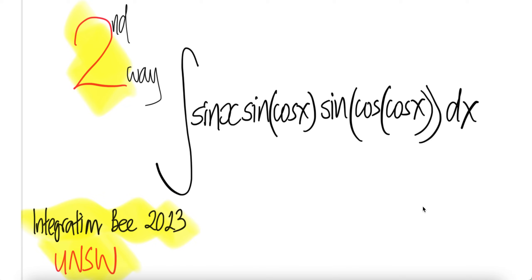Integral sin x times sin(cos x) times sin(cos(cos x)) dx. Let us do this in the second way. Problem taken from Integration B 2023 UNSW.